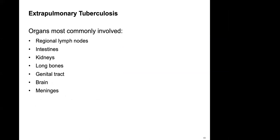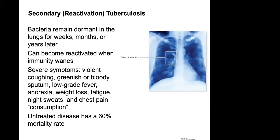Extra-pulmonary tuberculosis can involve regional lymph nodes, intestines, kidneys, long bones, genital tract, brain, and meninges. Some people experience reactivation of TB — bacteria remain dormant in the lungs for weeks, months, or years and can become reactivated when immunity wanes.